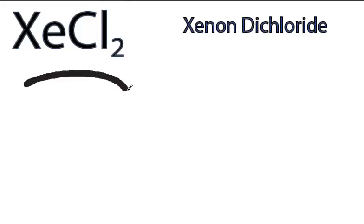This is the Lewis structure for XeCl2, Xenon Dichloride. For XeCl2, we have a total of 22 valence electrons.